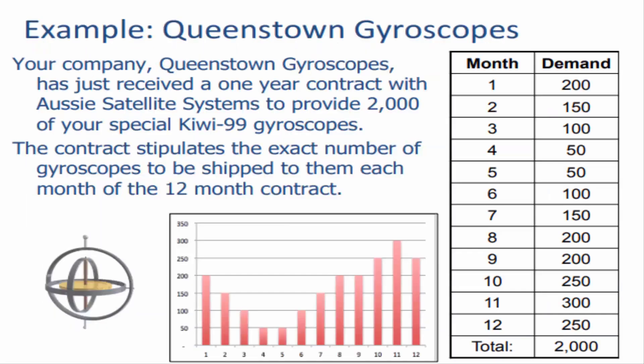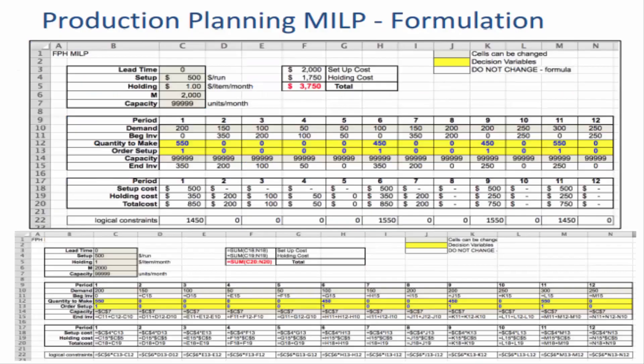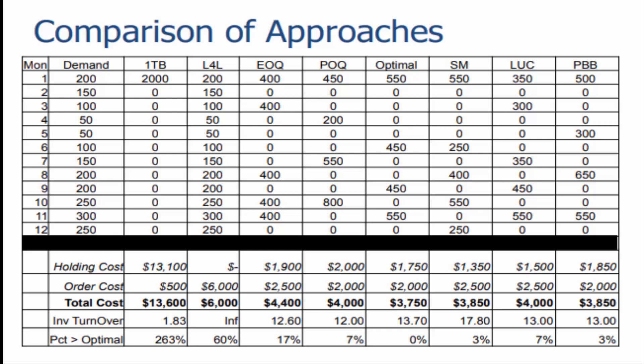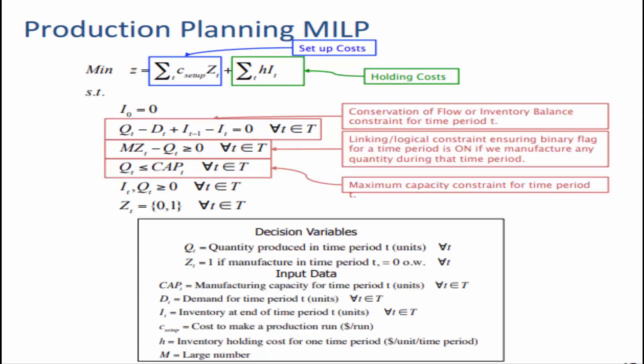You will learn Fixed Planning Horizon (FPH) or lot sizing, covering heuristics versus optimal models — including an introduction to production planning and fixed planning horizons. Topics include: Lot for Lot (LFL), Fixed Order Quantity (FOQ), Economic Order Quantity (EOQ), Periodic Order Quantity (POQ), Silver-Meal, Least Cost Period, Wagner-Whitin, and Production Planning Mixed Integer Linear Programming (MILP).